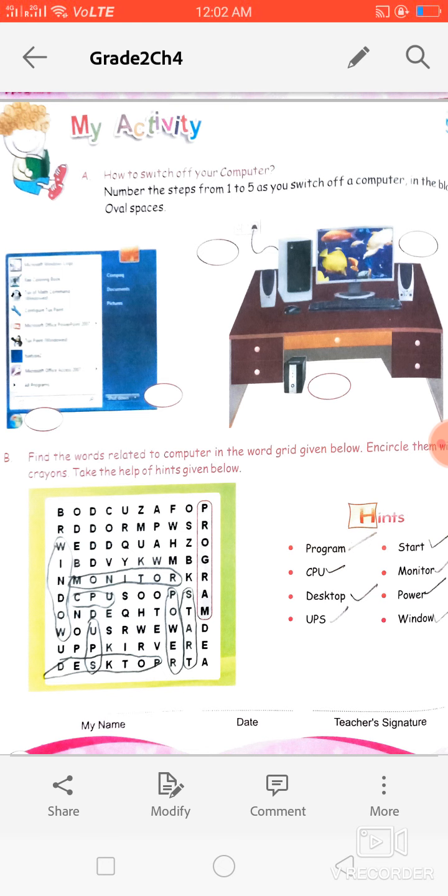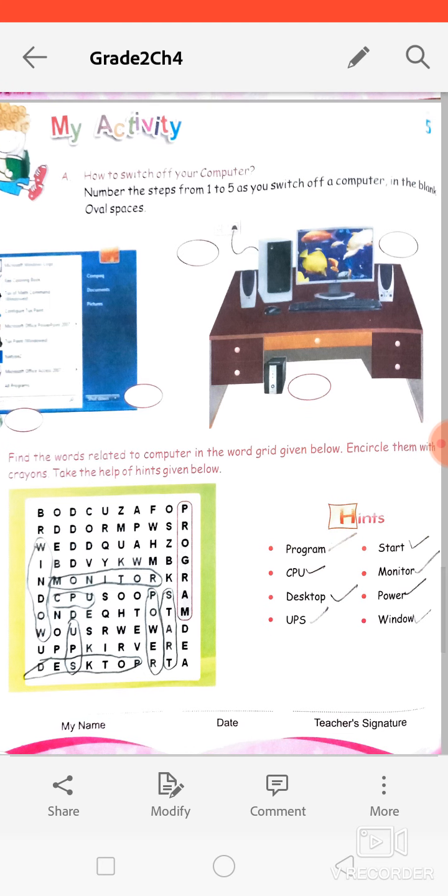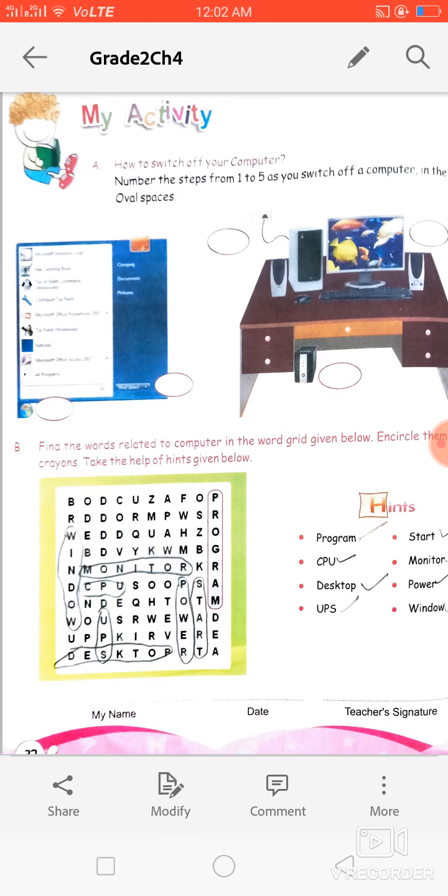And in B section we have a crossword here and some hints are given, like you all can see here. So you have to identify the spelling in this crossword puzzle and you have to encircle it and you can fill crayons also. It's your choice. It's not compulsory to fill the colors. You can encircle them with pencil only, okay, to complete these two pages. Okay, see you in the next class. Take care of yourselves. Bye.